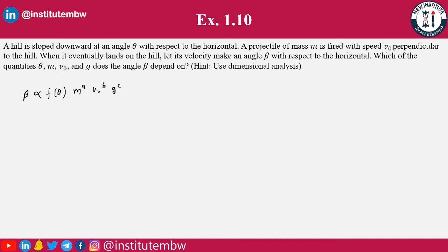Using dimensional analysis, we know that beta is dimensionless, so its dimension is m^0 l^0 t^0. And theta, f of theta, is also dimensionless. Then m to the power a, v0 to the power b, g to the power c—if you use your common sense, you can see this is a dimensionless term.